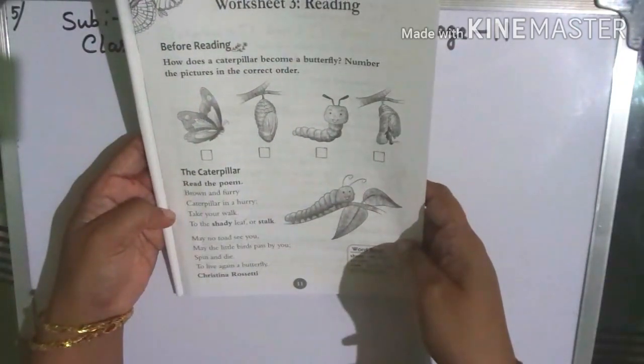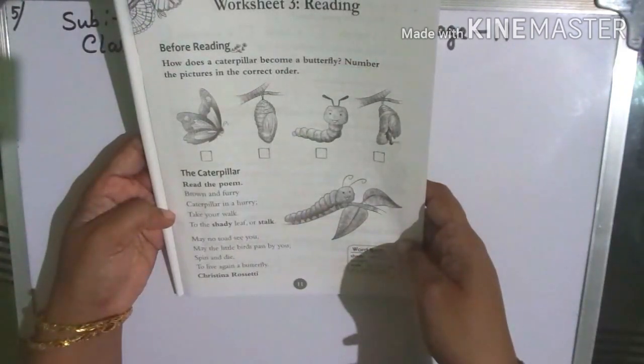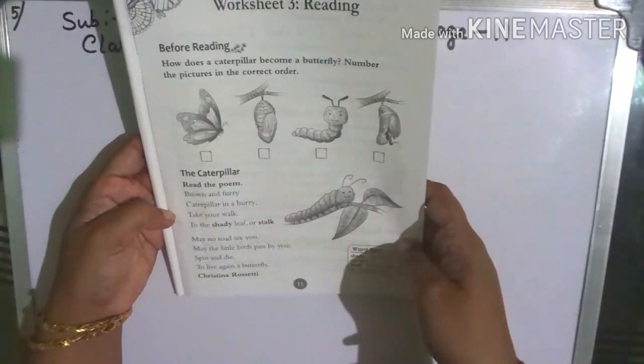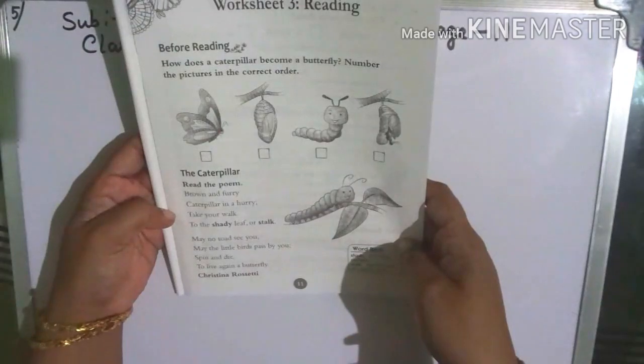May no toad spy you, may the little birds pass by you, spin and die to live again a butterfly. This poem is written by Christina Rossetti.